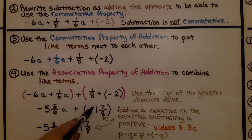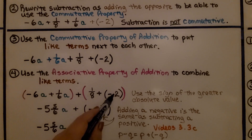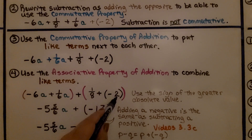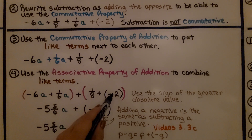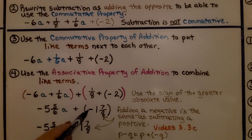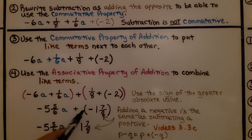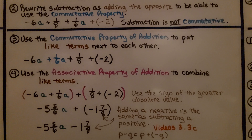Adding 1/8 plus negative 2: the negative 2 has a greater absolute value, so we use the sign of the greater absolute value — negative — and find their difference, which is 1 and 7/8. So we get negative 1 and 7/8. Adding a negative is the same as subtracting a positive, so instead of plus negative 1 and 7/8, we write minus 1 and 7/8. This comes from the rule p minus q equals p plus negative q, covered in video 3.3c.